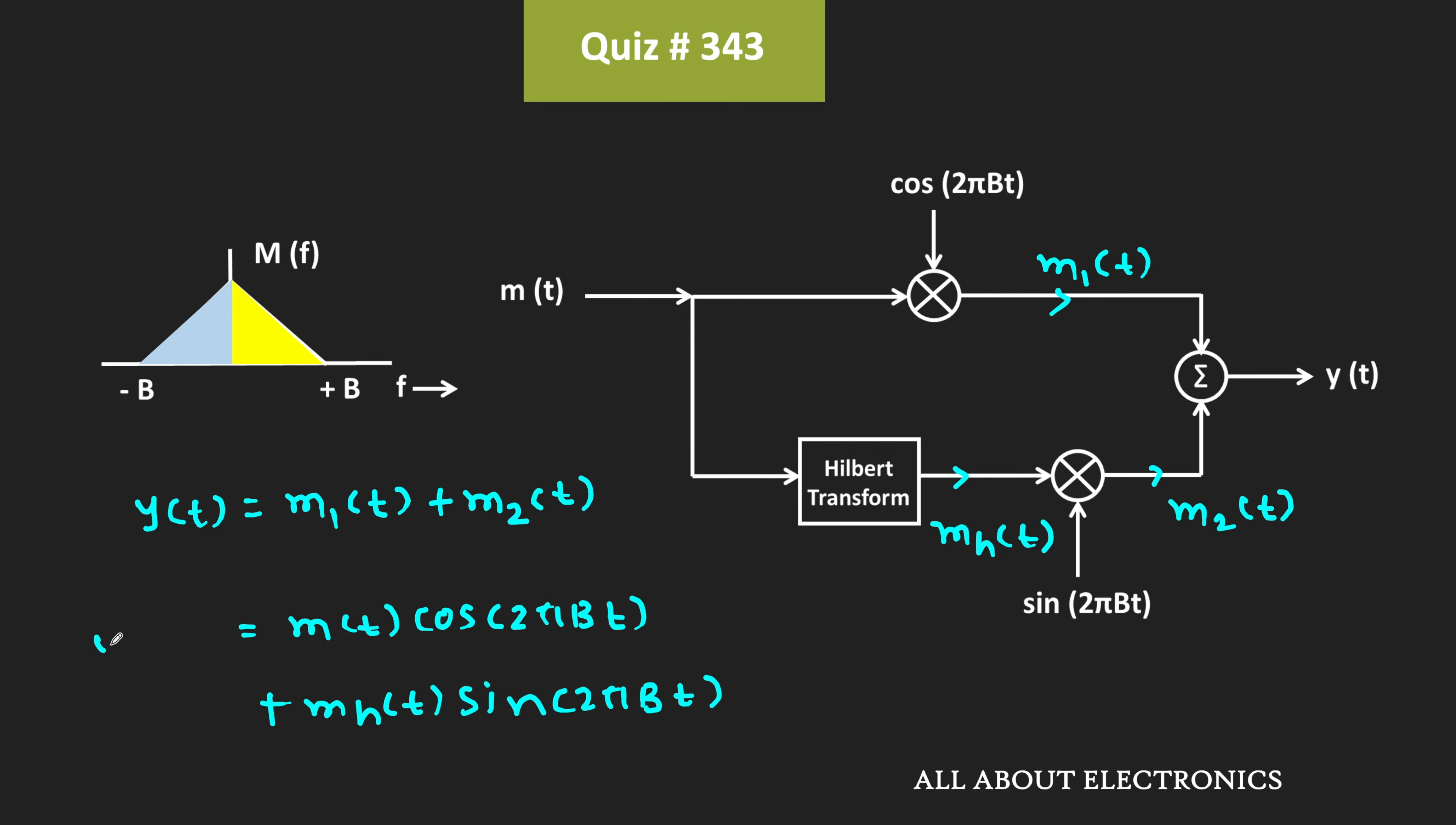So this is the output signal YT. If you closely observe this equation, then it is the equation of the single sideband suppressed carrier. And here, because of the positive sign, it is the case of the lower sideband suppressed carrier.